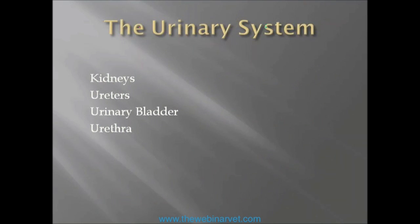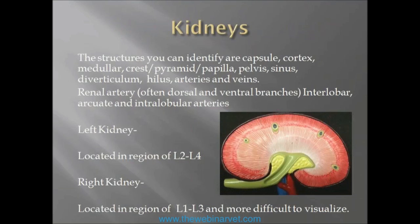Kidneys, ureters, urinary bladder, and urethra are the four subjects we'll be touching on today. The structures within the kidneys that you can identify include the capsule around the outside, the cortex area, the medulla, and then the renal crest, papilla, or pyramid. Then you've got the renal pelvis, which most of the time in ultrasound you don't actually see or particularly want to see. The sinus is the hyperechoic fat in the middle. The diverticulum basically means the sinus breaks up to go into the dorsal and ventral parts of the kidney, finishing off at the spots where the arteries and veins come through.